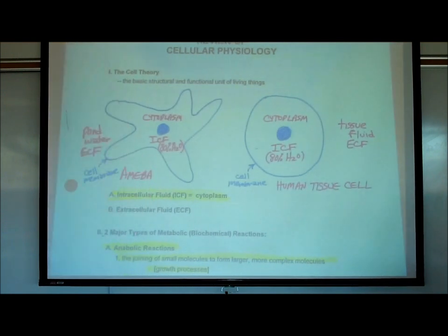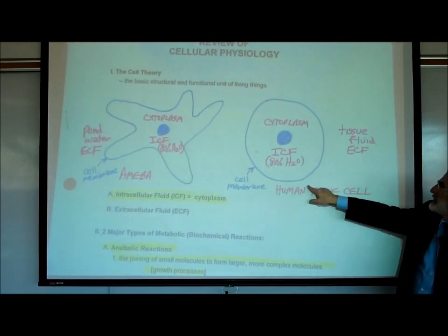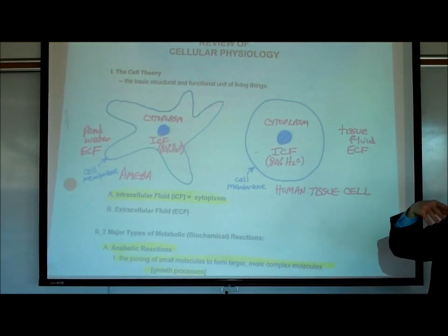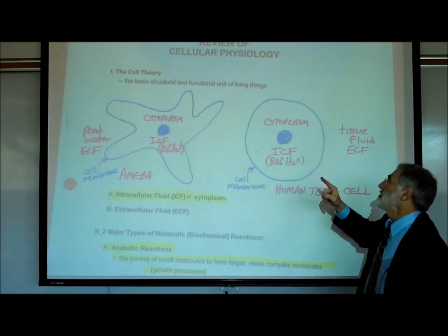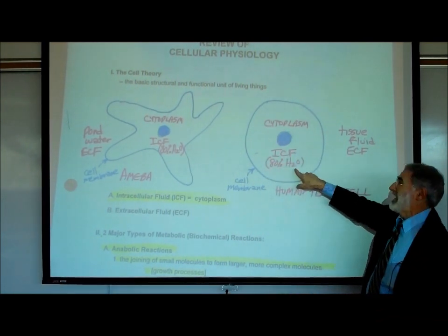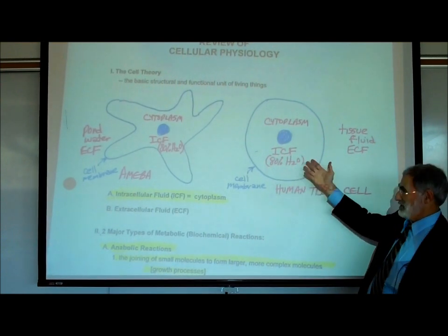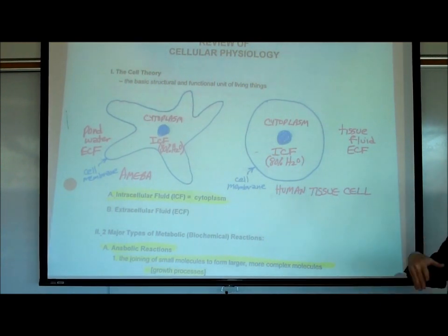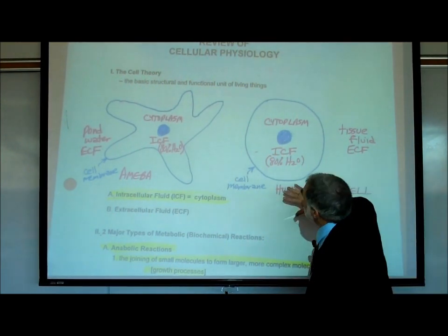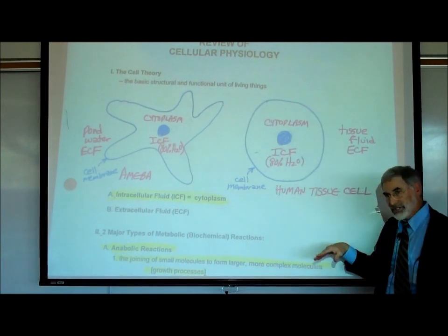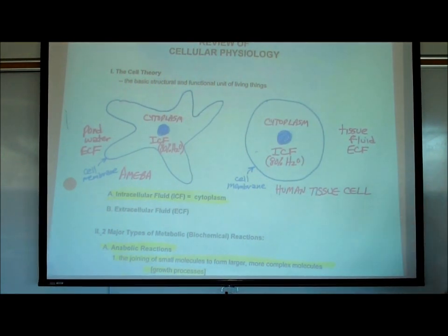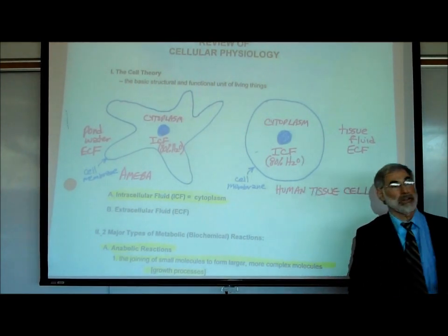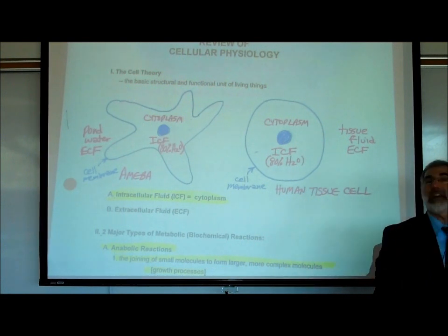What about our cells? This cell represents a human tissue cell — it could be a liver cell, a pancreas cell, a skin cell, it doesn't matter. Just like the amoeba, the cytoplasm is 80% water, so it's also known as intracellular fluid. And just like the amoeba has to live in a fluid environment, there has to be fluid around all living human cells. This fluid is known as tissue fluid — the ECF, or extracellular fluid, on the outside of human cells.